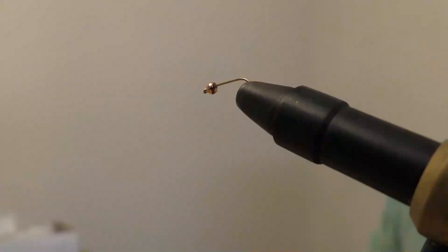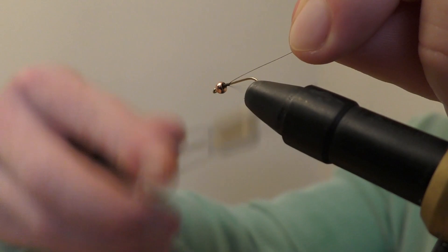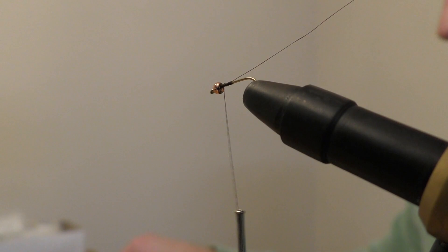Step one: take your thread and start it behind the bead. Do some wraps to get that nice and situated. Go ahead and take your tying scissors and clip that off. We're ready to start on this fly.